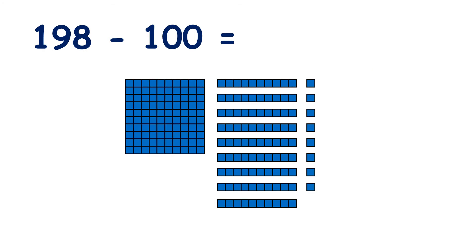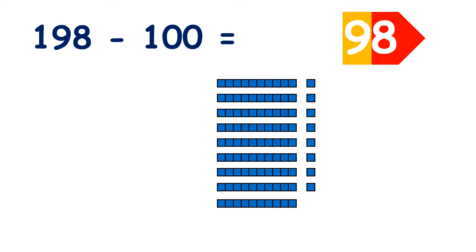What is 198 minus 100? So we have 100, 9 tens and 8 units. If we subtract 100, we're left with 9 tens and 8 units, 98.